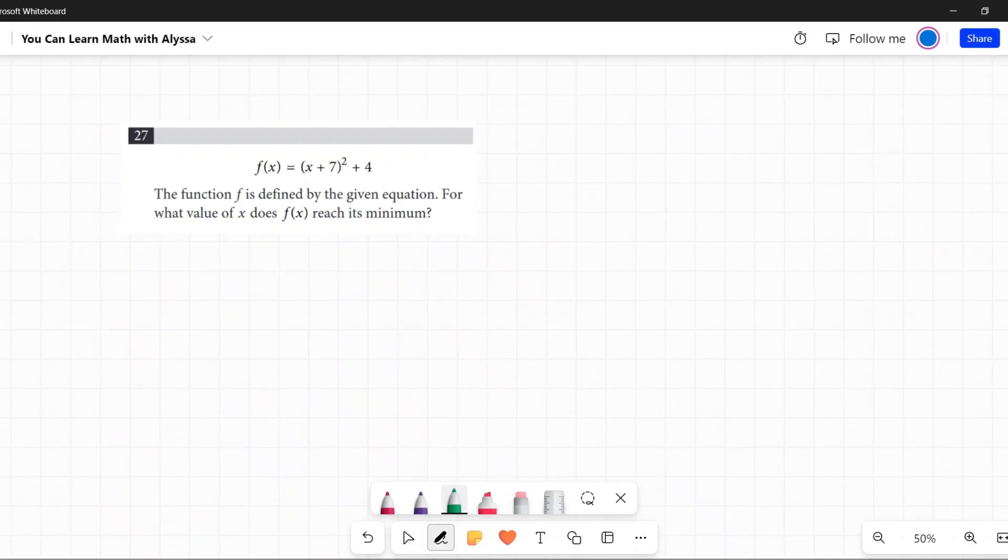f of x equals x plus 7 squared plus 4. It's another one. I told you there were three on here. Another one where they want you to know how to move a function around by adding numbers to different parts of the function.